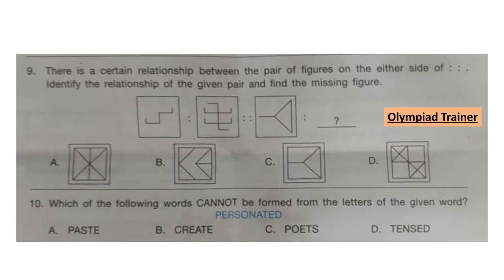Question 10: Which of the following words cannot be formed from the letters of the given word? The word is 'personated'. The correct answer is option B: Create. 'Create' cannot be formed from the letters because the letter C is not present in 'personated'.